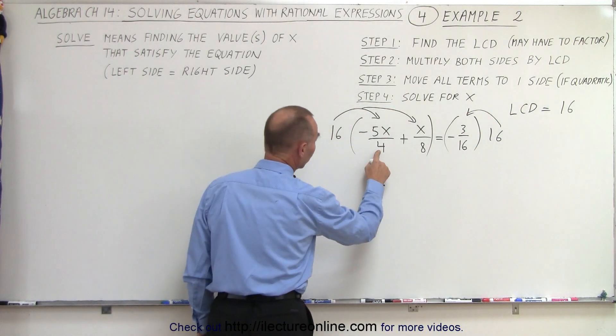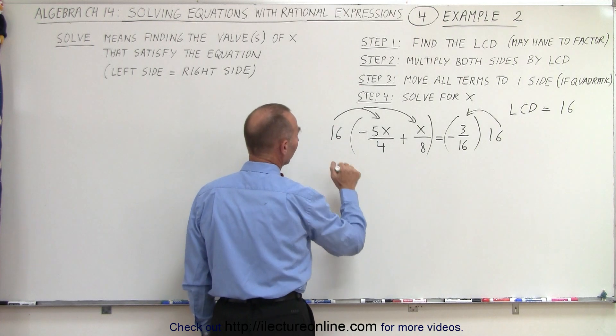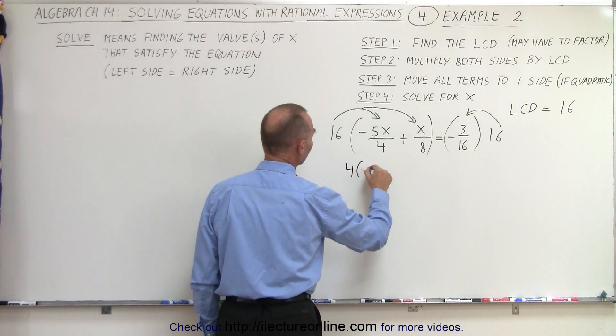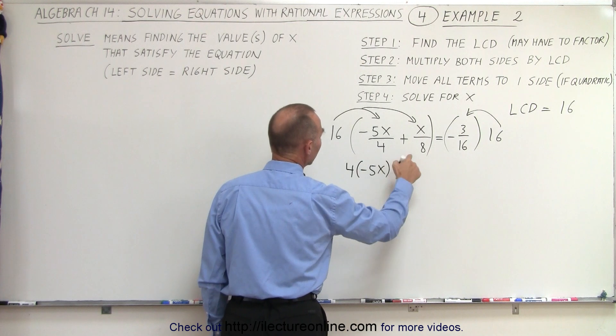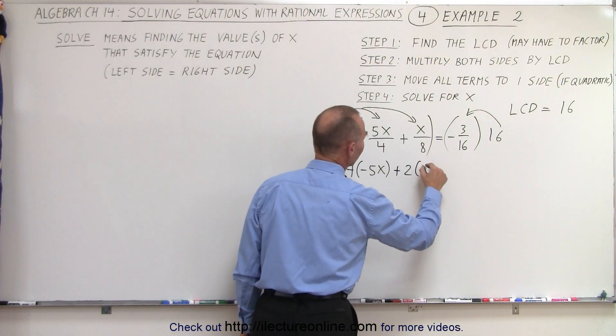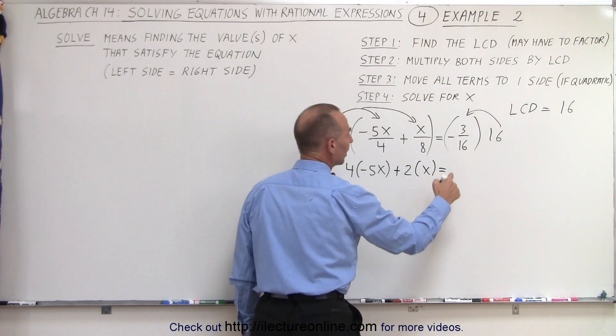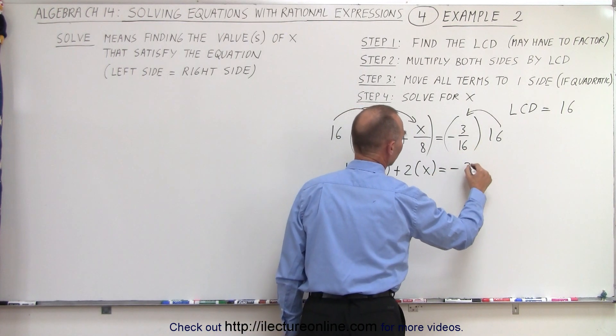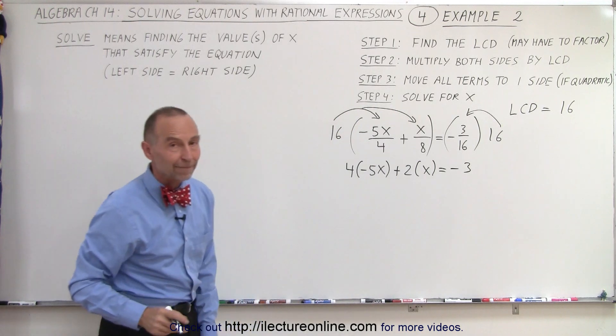notice that 4 goes into 16 four times, so we end up with 4 times minus 5x. Here 8 goes into 16 twice, so we end up with plus 2 times x equals. Here 16 divided by 16, they cancel, and we're left with a negative 3 on the right side.